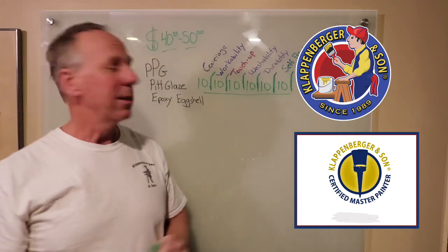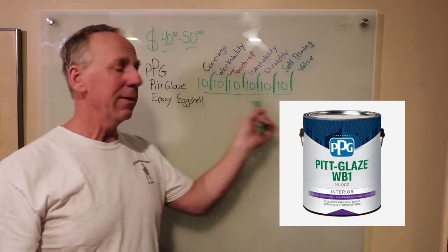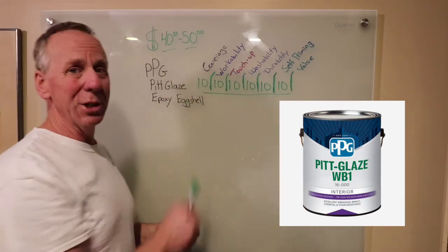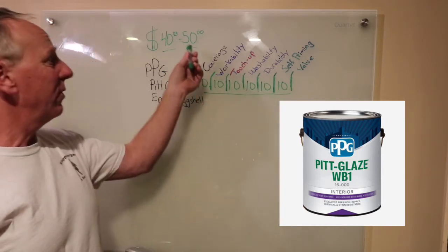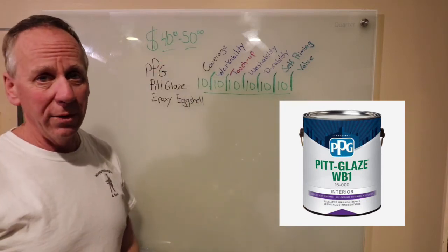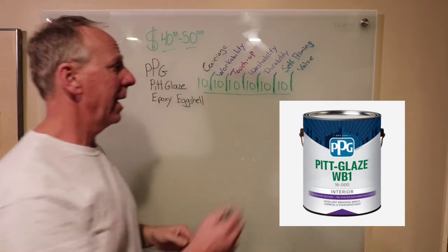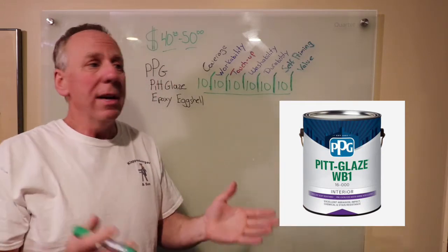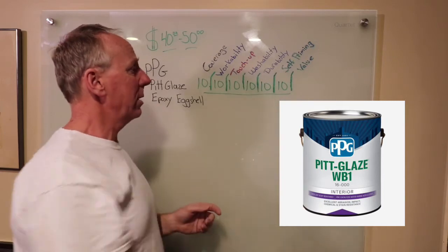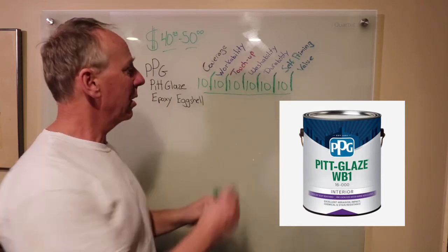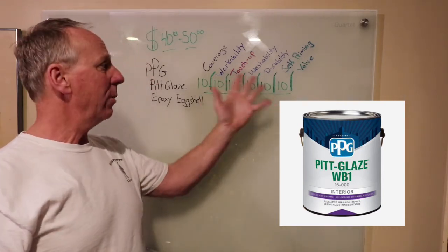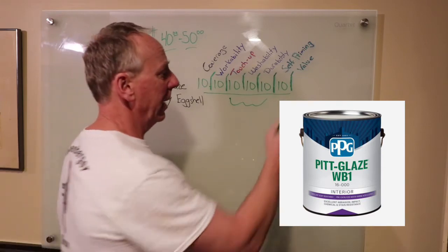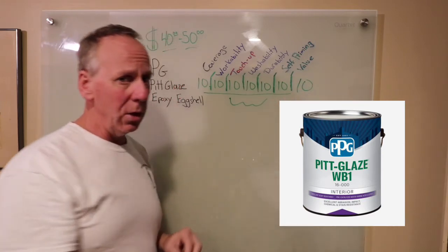And a price point of $40 to $50, to tell you the truth, if this was $90, I'd still be giving this thing 10s across the board, but maybe an 8 or a 9 for a value because it's just too expensive. This retails for $50, wholesales for $40. Contractors can even get it for a little bit less than that. The value of this paint makes this thing a must. If these things are important to you, especially the touch-up, the washability, and durability, you get all three here. No matter how you want to fix your wall, it's going to work out perfectly for you. It gets a 10 all the way across the board.